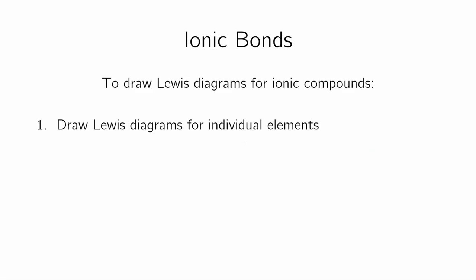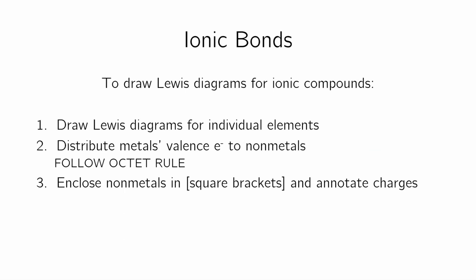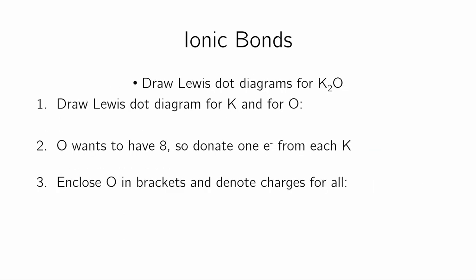To draw Lewis diagram for ionic compounds, you draw the Lewis diagram for the individual elements, distribute the metals' valence electrons to the nonmetals to follow the octet rule, and enclose nonmetals in square brackets and put the charge up. And that should be it.